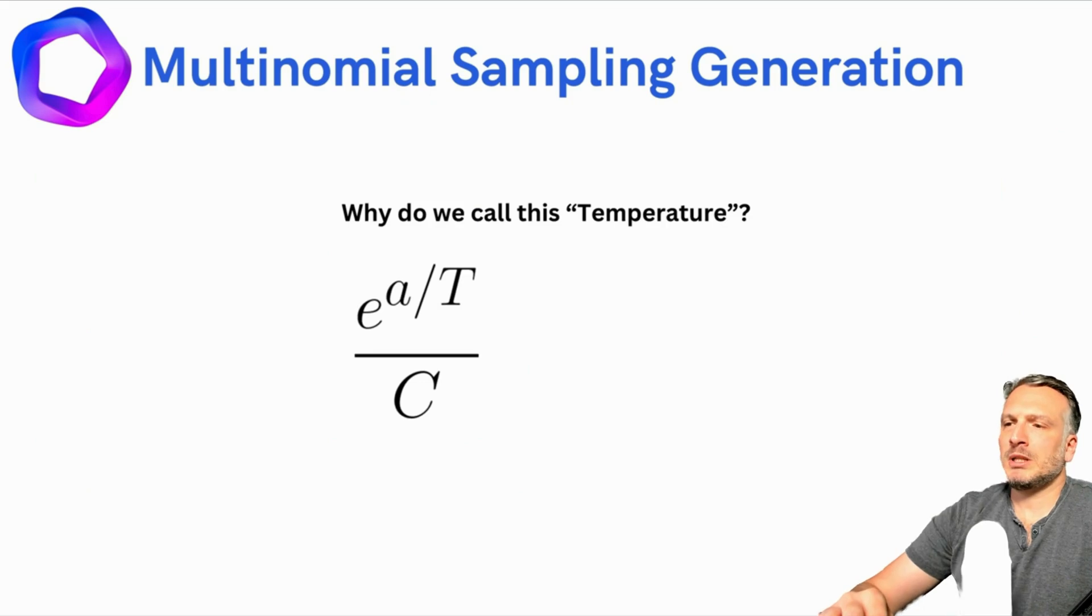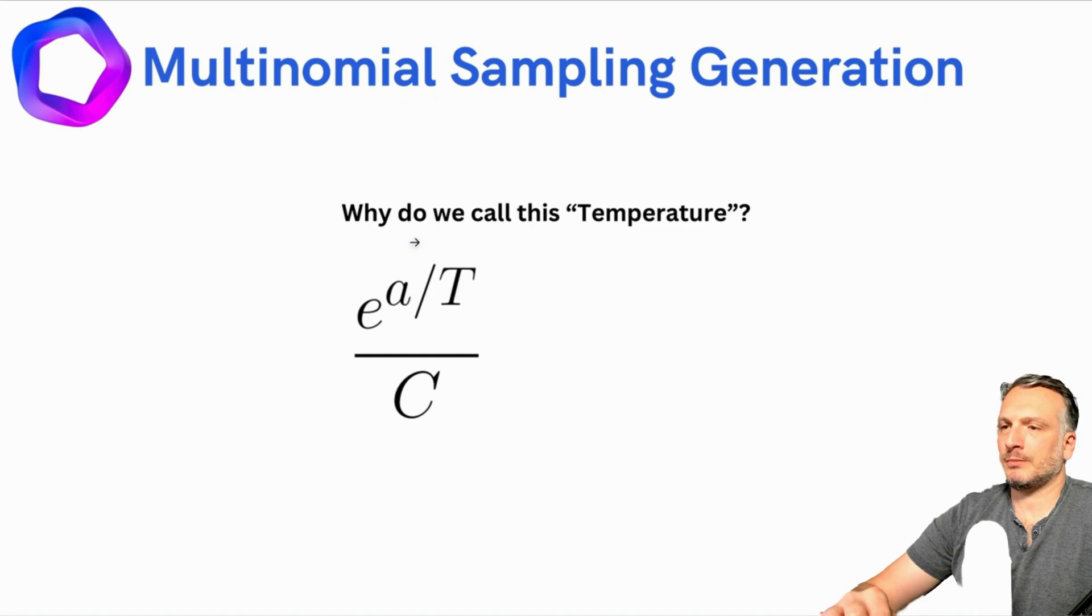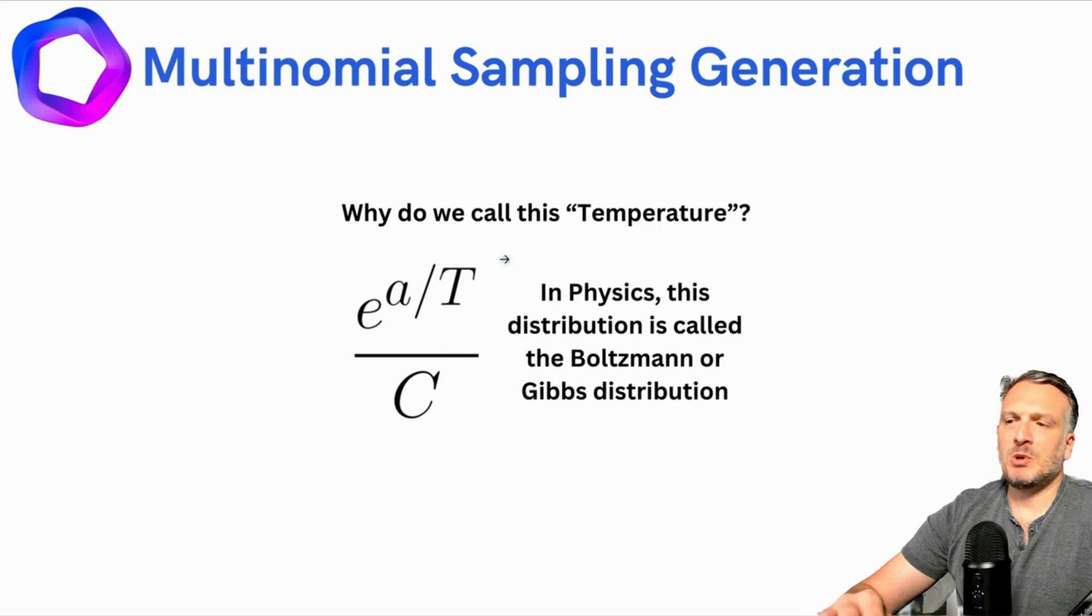So, small parentheses, why do we call this temperature? Well, in physics, this distribution is called the Boltzmann or the Gibbs distribution. This is a very common distribution in statistical physics, and this distribution captures the distribution of the energy levels in a set of particles. And in the case of physics, the temperature is a common physical temperature that we know. And the people that implemented for the first time this softmax distribution with the temperature, they basically reused the jargon that we used in physics, meaning that they used the word temperature.